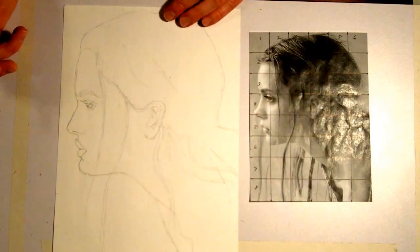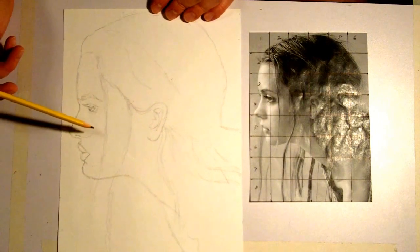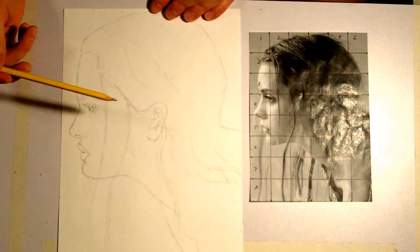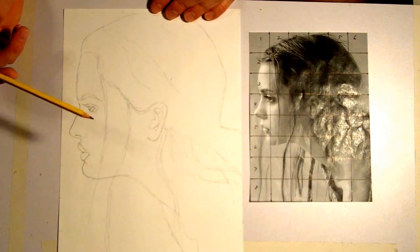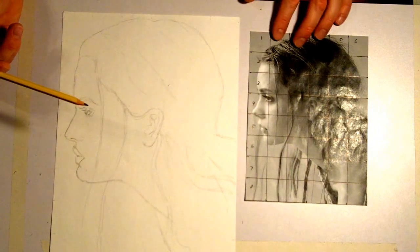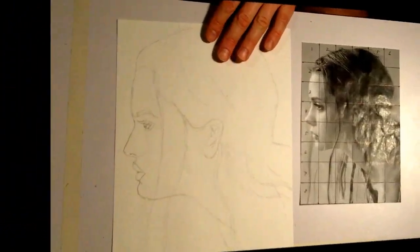So as you can see in a relatively short amount of time you can get a very accurate outline drawing of facial features, save yourself a ton of time, save yourself a lot of anguish and agony, and just use this trick. Use the grid to place facial features exactly where they belong.